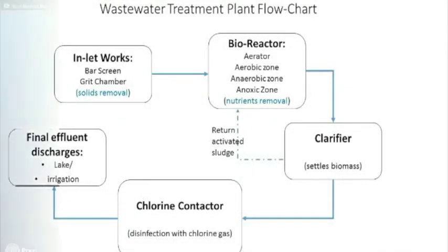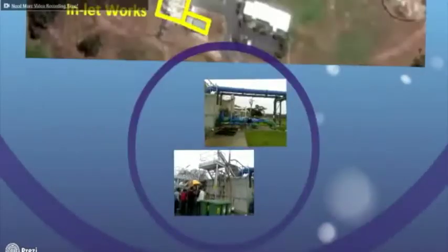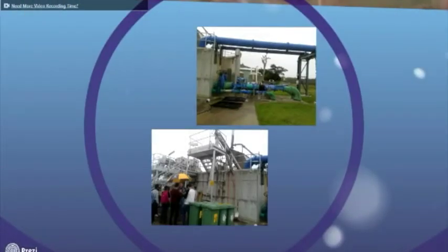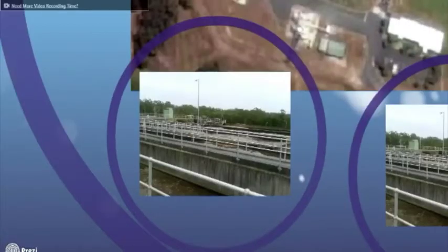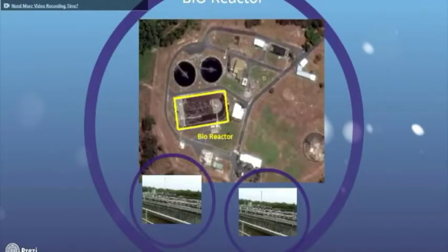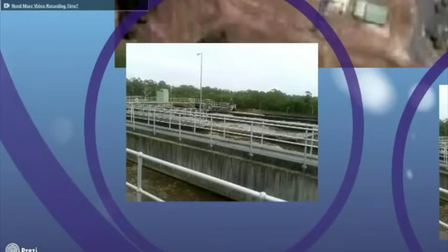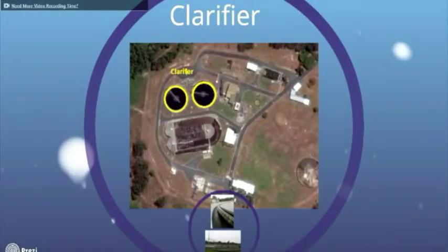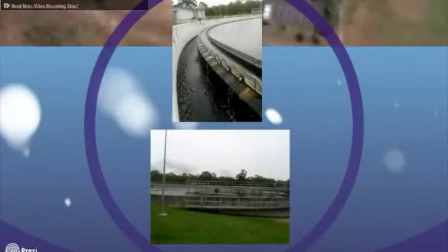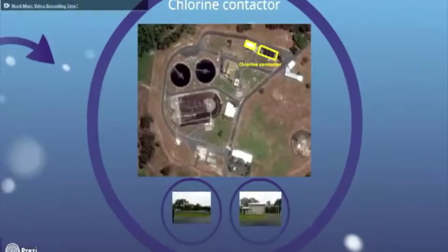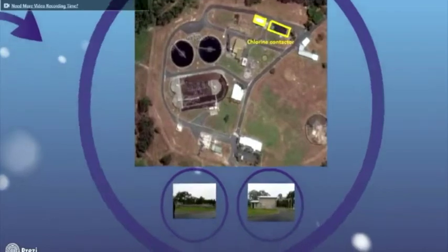The first step is the inlet works, where suspended solid particles are removed. The next step is the bioreactor, where nutrient removal occurs. Then we go to the clarifier, and after that, disinfection happens by chlorine gas. The last step is effluent discharging — effluent is discharged to the lake or used for irrigation purposes.